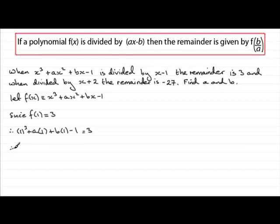So if we work this out, what have we got? We've got 1 cubed which is 1, take away 1, well that goes out and you've got a times 1 which is a, b times 1 which is b, so you've got a plus b equals 3.